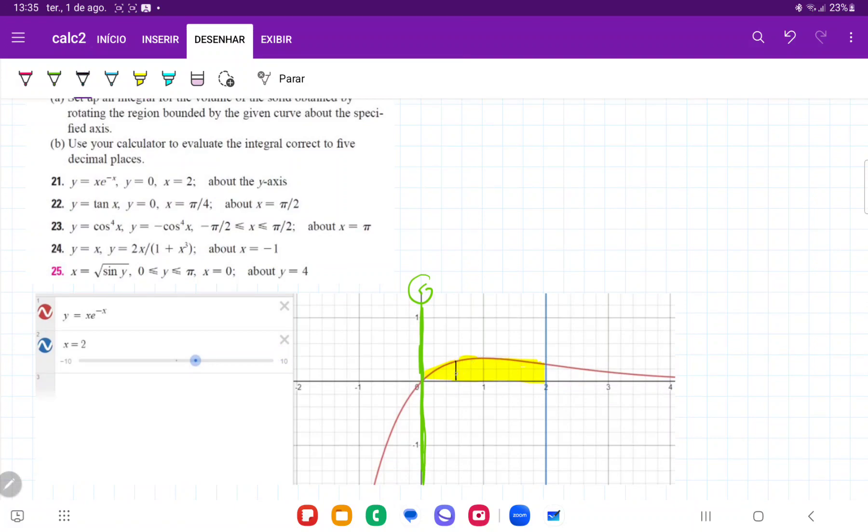So when we rotate it about the y-axis, what is going to happen is we're going to have these little chunks here, and they get rotated like so to make a cylinder. And so this volume is basically going to be the sum of all these cylinders.